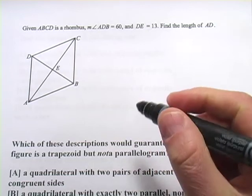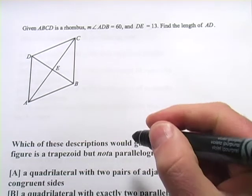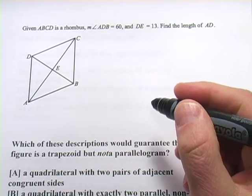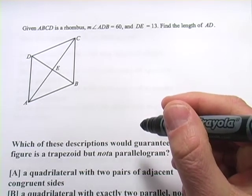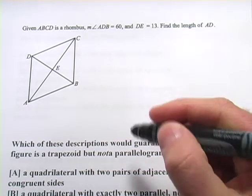In these problems, we're looking at some of the characteristics of quadrilaterals. So, squares, rectangles, rhombuses, parallelograms, kites, trapezoids, those kinds of things.